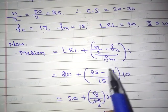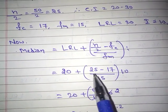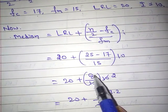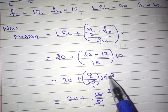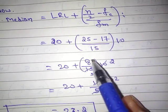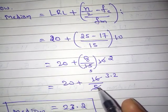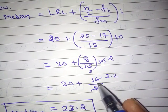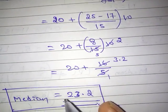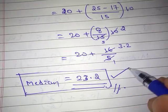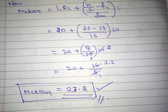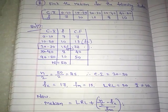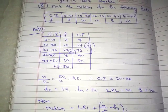Continuing the calculation: 25 − 17 = 8, so we get 8/15 × 10 = 80/15 = 16/3 ≈ 3.2. Therefore, Median = 20 + 3.2 = 23.2. So the required median is 23.2. This is the actual method to find the median in grouped data. Thank you for watching this video; I hope all of you understand.